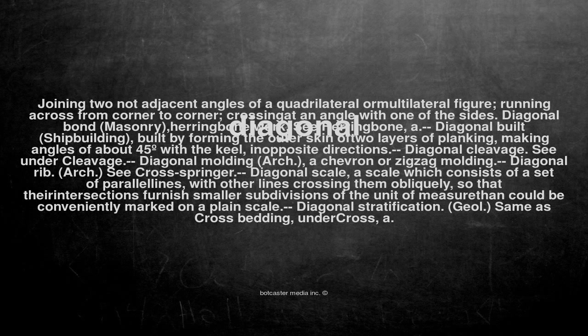A diagonal built, shipbuilding: built by forming the outer skin of two layers of planking, making angles of about forty-five degrees with the keel, in opposite directions.